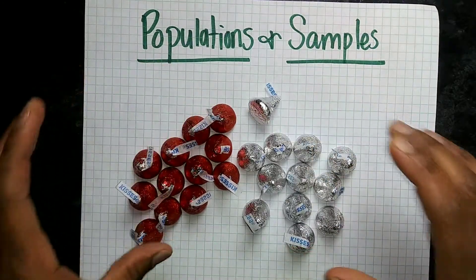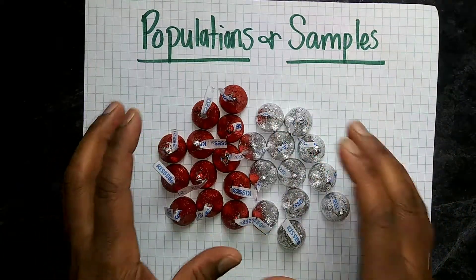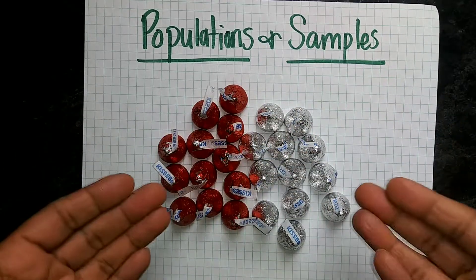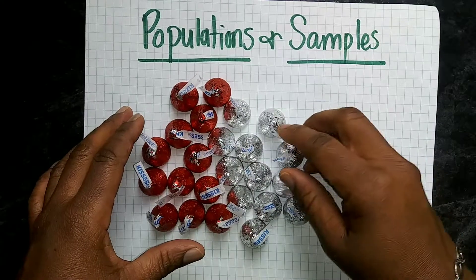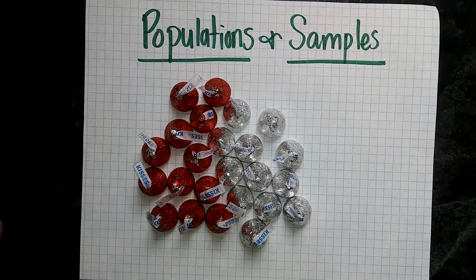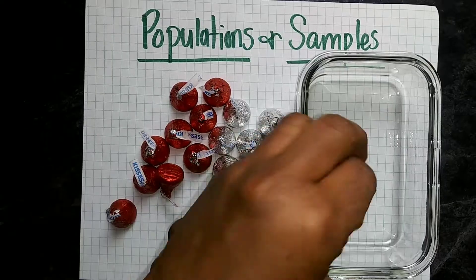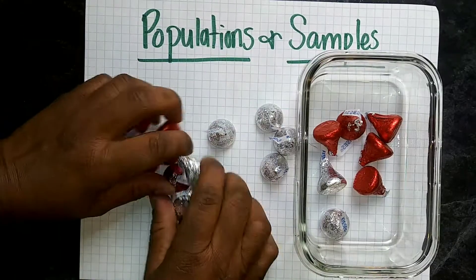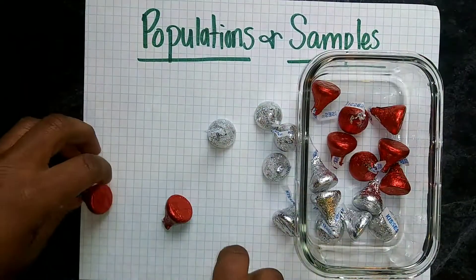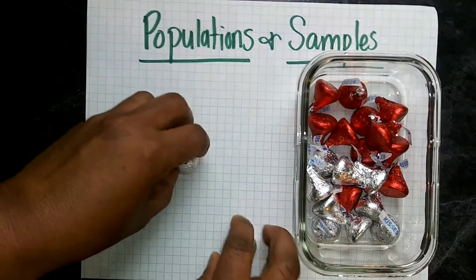Here I have some Hershey's, and these are going to represent the population. The population is the whole group of things or individuals that you want to study. Now within this population, when it comes to statistics, I want to be able to take a sample. So if I take this population of Hershey's and I put them inside of this bowl, you can visualize that this represents people or whatever you want to study.